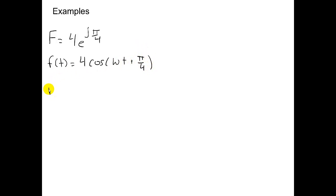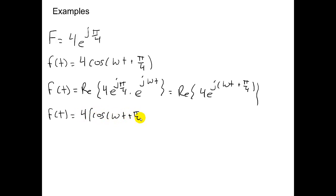Alternatively, if you wanted to work through all the math, you can find F of t by taking the real part of 4 e to the j pi over 4 times e to the j omega t. Again, I can rewrite this as 4 e to the j omega t plus pi over 4 using Euler's identity. I can rewrite this as 4 times cosine of omega t plus pi over 4 plus j sine of omega t plus pi over 4.